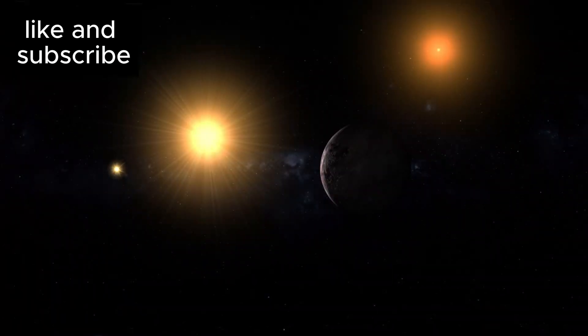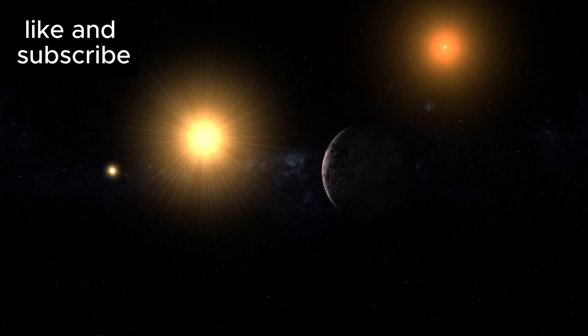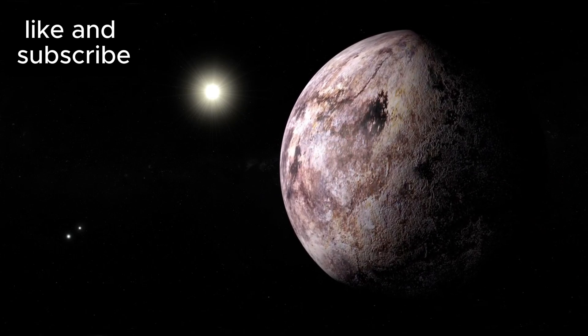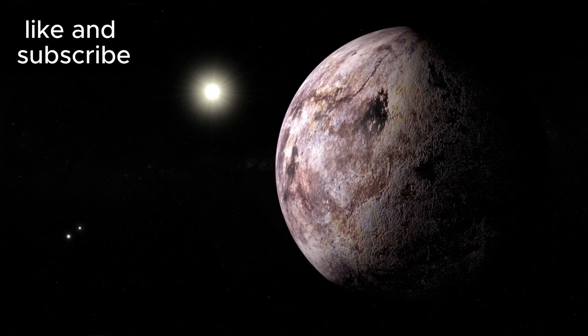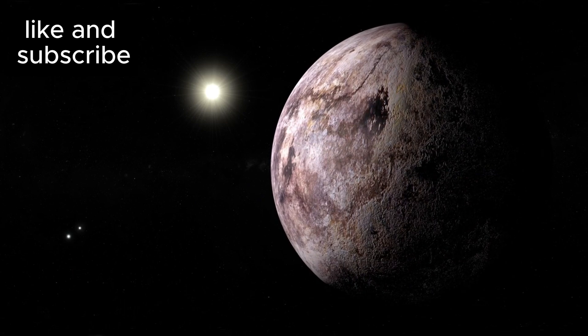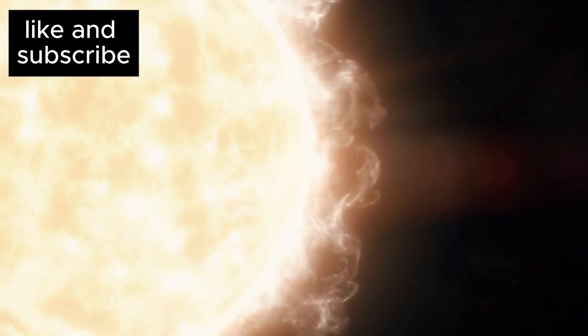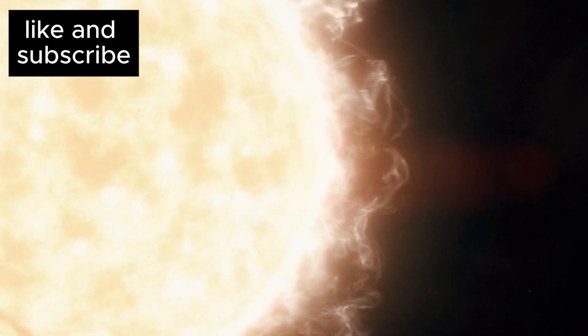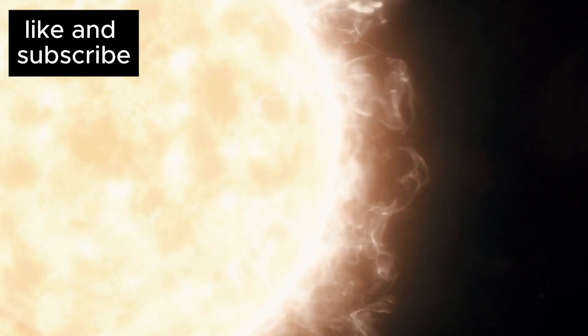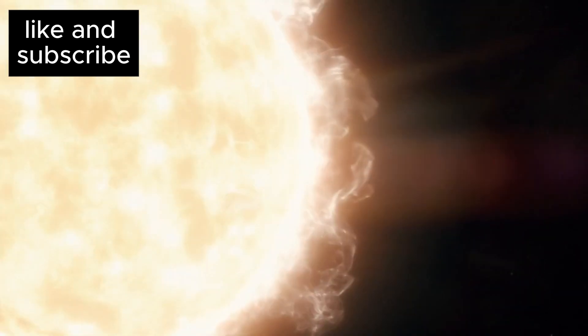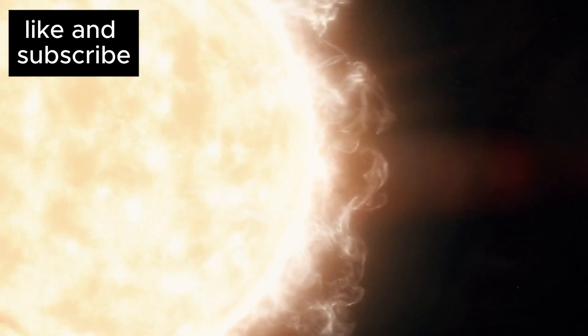Adding to the complexity of Proxima B's environment is the extreme radiation from its parent star, Proxima Centauri. This red dwarf is far more active than our sun, unleashing powerful solar flares that could strip away any atmosphere and make the planet uninhabitable. In 2021, Proxima Centauri emitted a solar flare 100 times more powerful than the strongest flares we've seen from our sun, raising concerns about the viability of life on nearby planets.